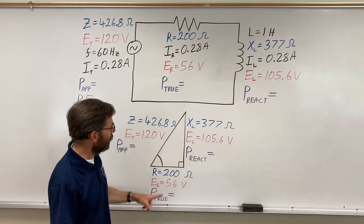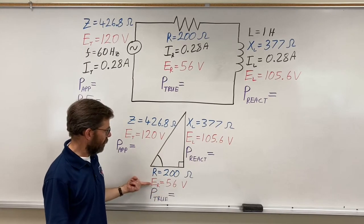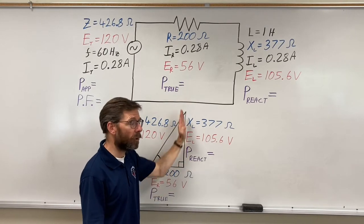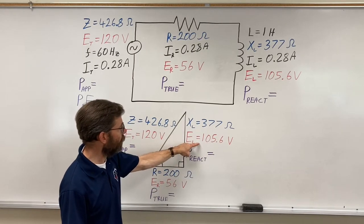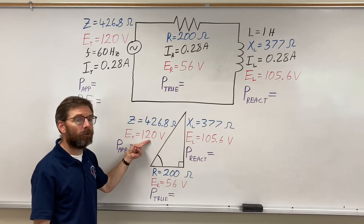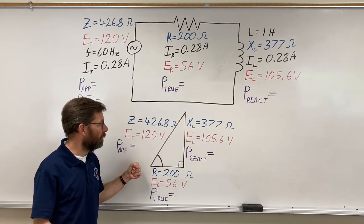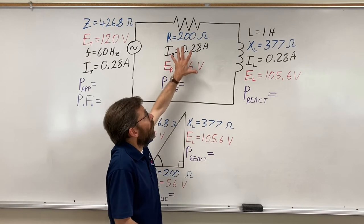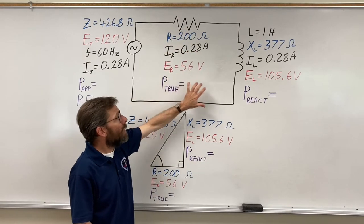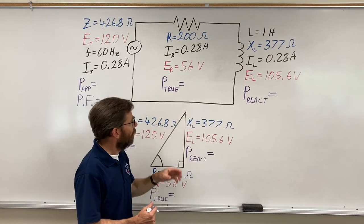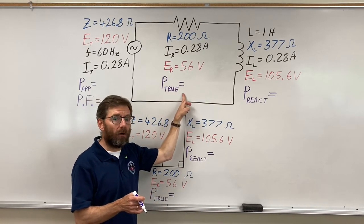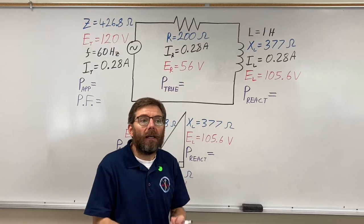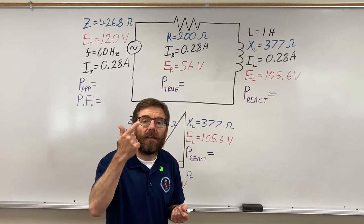But then the light bulb went off and we said try the triangle. We did. We put 56 here, all the resistive values on the horizontal, the reactive components on the vertical, 105.6, did our Pythagorean and it came to 120. Beautiful. Now we're dealing with power. It's Ohm's law, and so far you've worked with resistors, so you know power as watts. What we're going to call that now is true power.